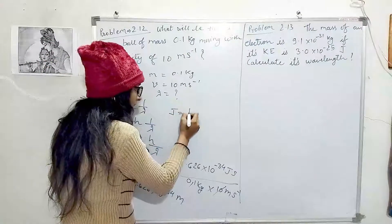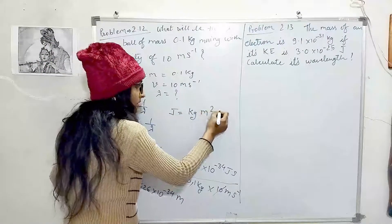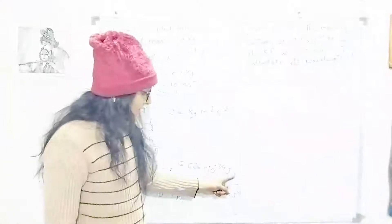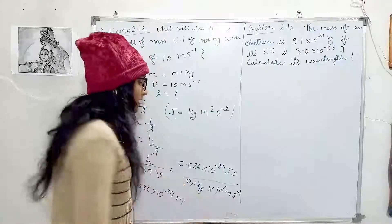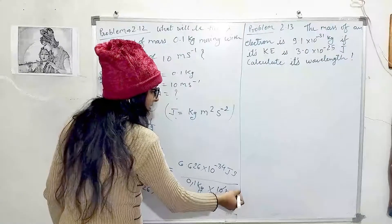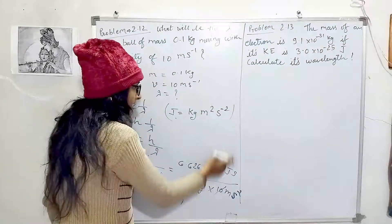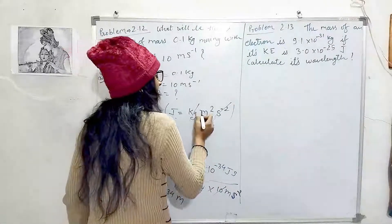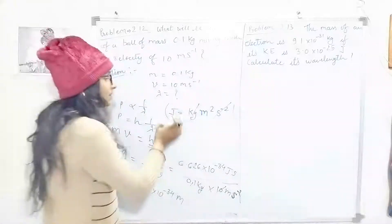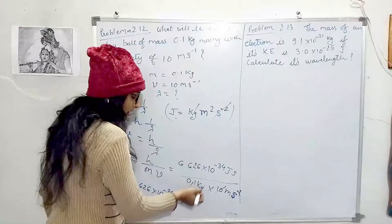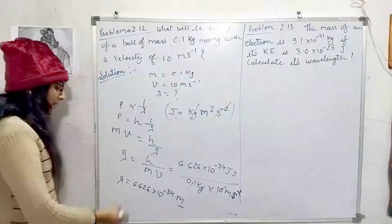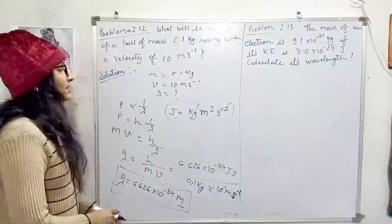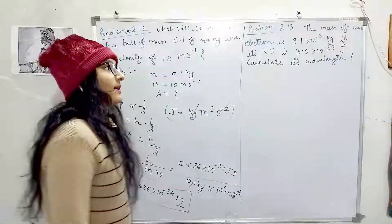Now let's verify the units. Joule is equal to kilogram·meter²·second⁻². Taking the seconds, second⁻² combined with second from h gives meter per second. Kilogram cancels with kilogram in the denominator. This confirms the unit of wavelength is meters.